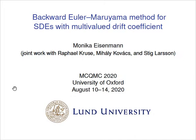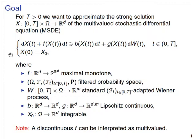The overall goal of this talk is to approximate the strong solution x of the multivalued stochastic differential equation on a finite time horizon, where f is a maximum monotone mapping. That means f of x can be a whole set of points, and therefore instead of having an equality we have an inclusion. We have a filtered probability space, omega, the standard ft-adapted Wiener process, b and g are Lipschitz continuous functions, and x0 is an integrable initial value.